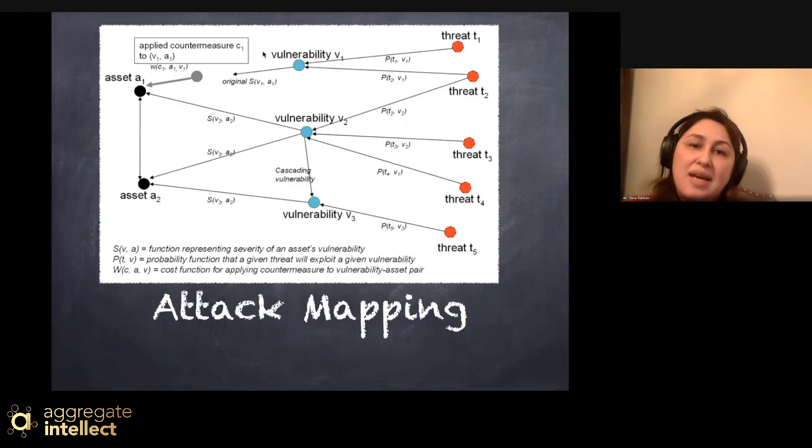Another place that graph is used in cybersecurity is attack mapping. If you map out your computer network in a company that has hundreds, thousands of computers or people who join to the network, it's very hard to find the attackers.